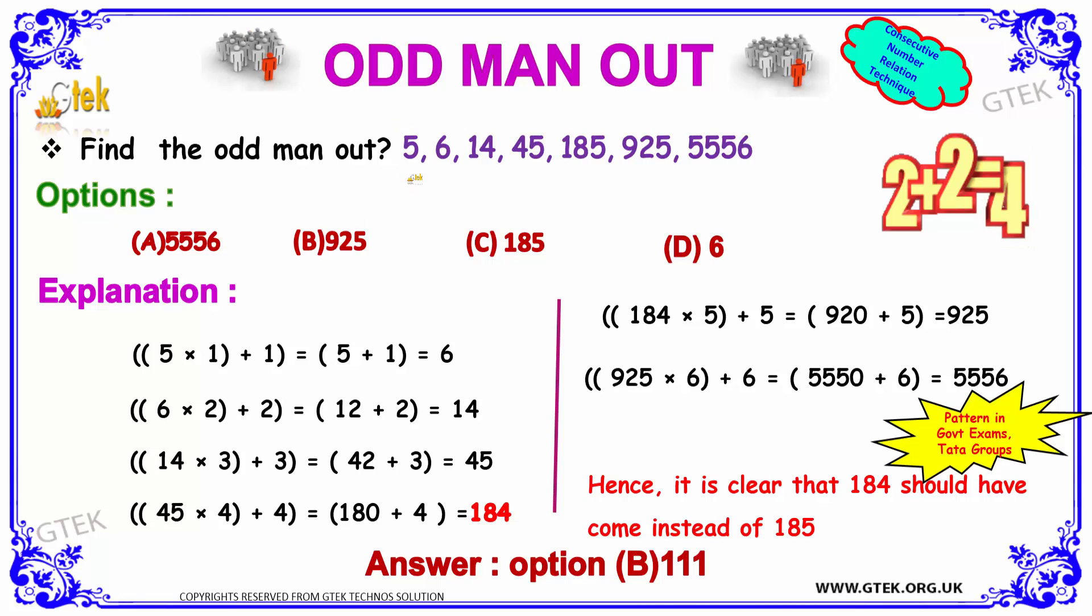Here we got 5, 6, 14, 45, 185, 925, and triple 5, 6. So here the explanation is, you are able to see the difference is 1 here, here it's 8, here it's 31. Somewhere there is a relation we have to find it. Here the options are given.